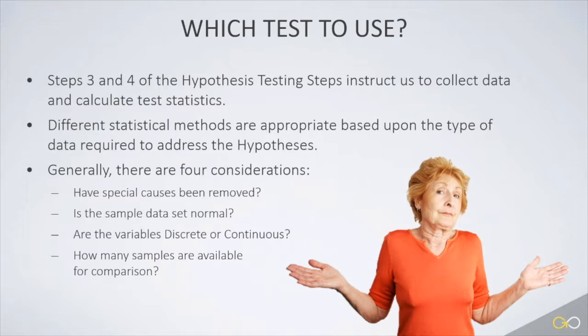One question is whether or not special causes are present in the data. Special causes will distort the data and invalidate the hypothesis test. Another key question is whether or not the data is normal. We have different tests depending upon normality.